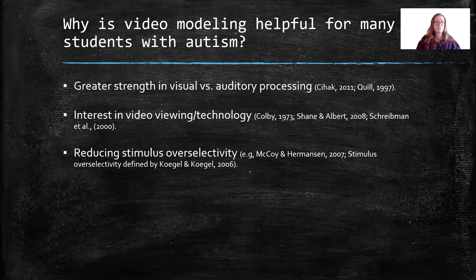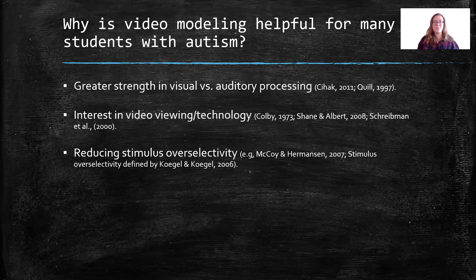Video modeling can also reduce stimulus overselectivity. What that means is with video modeling we can zoom in on exactly what we want the child to see, so there aren't a lot of visual distractions. The student is able to cue in on exactly what we want them to see, learn, and do — without a bunch of other stimuli in the environment being distracting.